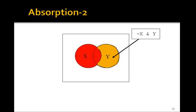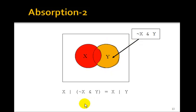Here's another absorption. Not x AND y is this gold color here. What happens if we OR x — that is, this red — with the gold? If you add the red to the gold, you just get x OR y. So x OR (NOT x AND y) is just x OR y. What gets absorbed here? The NOT x gets absorbed.